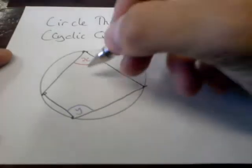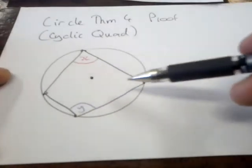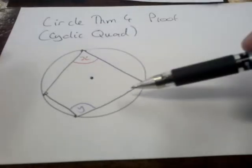Again, the genius insight is to draw in the centre of the circle. It doesn't actually need to be inside the cyclic quad, but it's much clearer if it is.